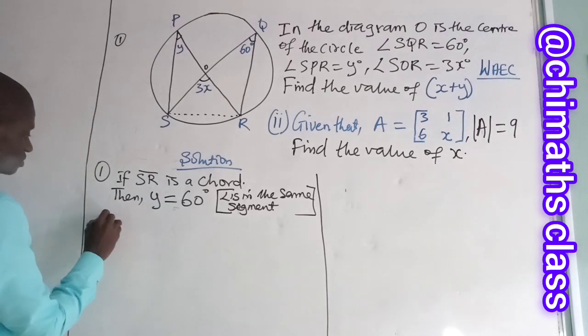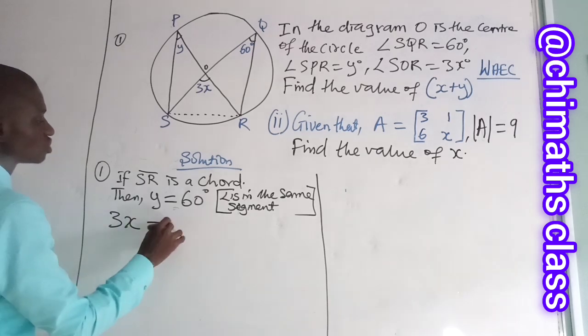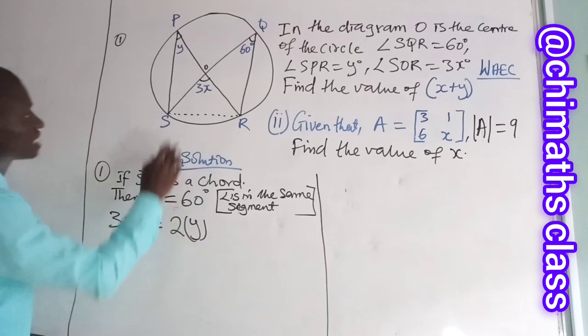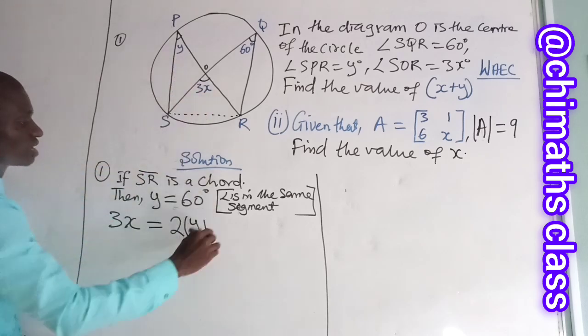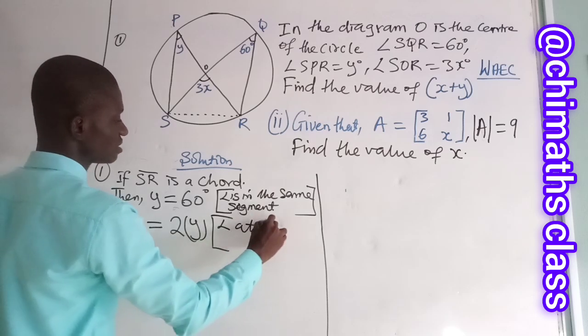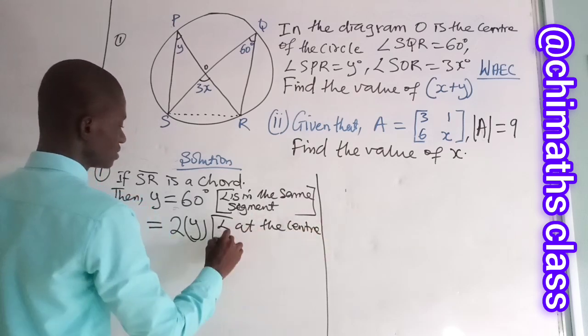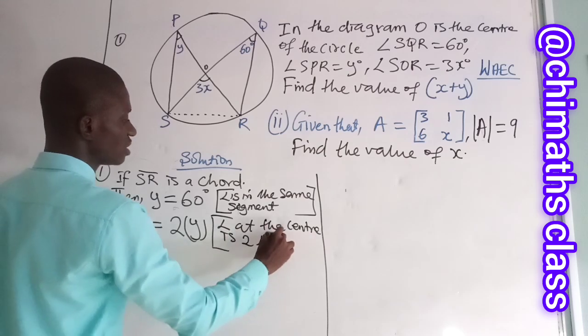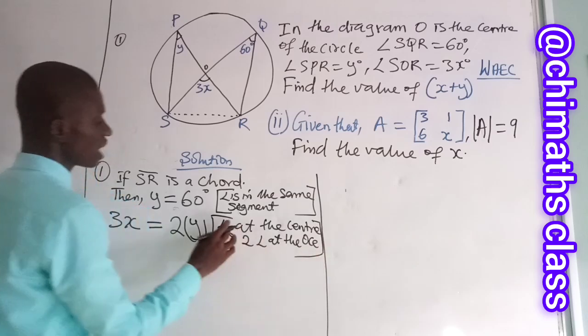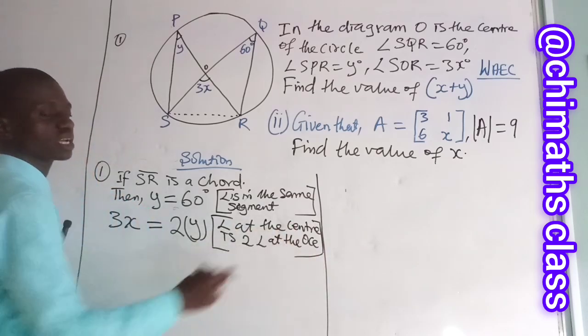Now, 3X is equals to 2 of angle Y. That is, angle at the center is twice angle at the circumference. Our reason is angle at the center is 2 angle at the circumference.